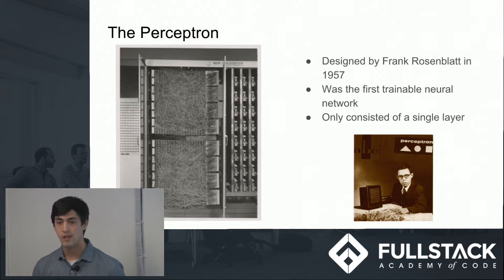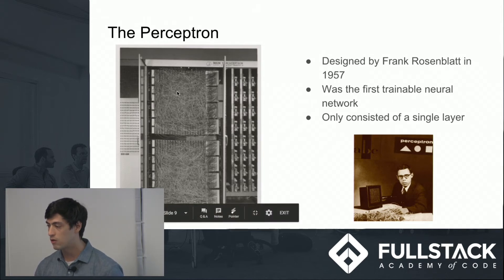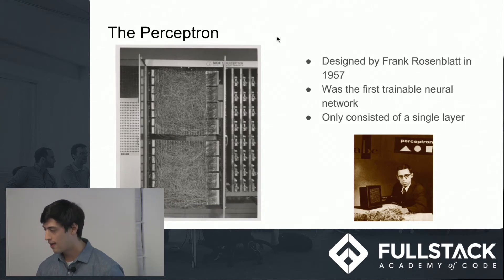That came along later with the Perceptron and Frank Rosenblatt in 1957. This was the first trainable neural network, but it was only one layer. We see this massive machine over here, not the most feasible thing, and actually just a couple years later, a professor at MIT was saying that neural networks aren't feasible. We only can do so many computations with one layer.